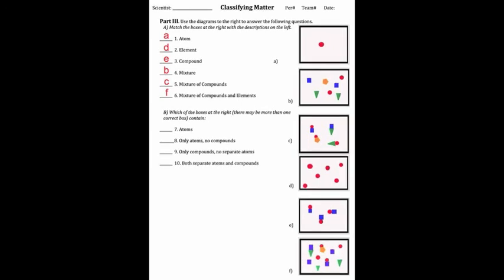In part B, we have to match the box on the right with the description on the left, but there might be more than one correct answer. Question seven: which box contains atoms? Well, A is an atom, D is a collection of atoms, and B has different atoms in there. But actually, all of the boxes contain atoms. Which one has only atoms and no compounds? A is an atom, not a compound. D has atoms that are not bonded together — not compounds. And B has different atoms not bonding together; that's a mixture. So A, B, and D are only atoms, no compounds.